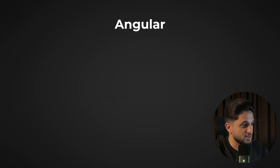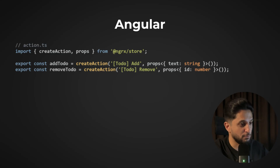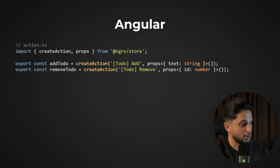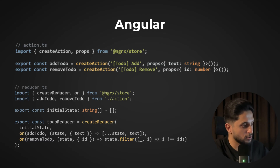In Angular, NgRx actions are a pure command pattern implementation. Each action encapsulates a request to change application state, and the store acts as the command invoker. You can dispatch actions, queue them, implement undo/redo functionality through state snapshots, and create middleware that logs every action for debugging. Reducer functions act as the command handlers that execute the actual state changes, and Angular's store manages the command queue to ensure predictable state transitions.